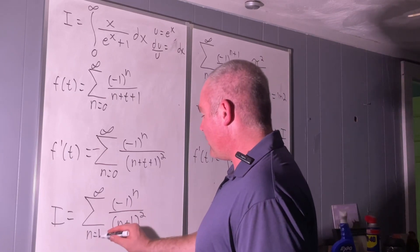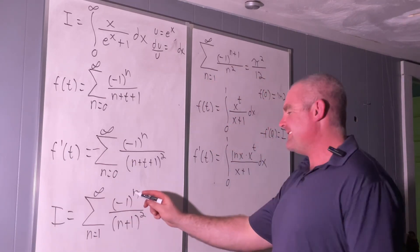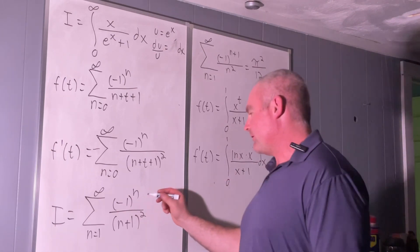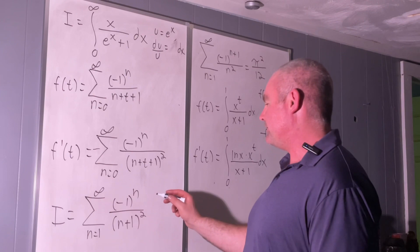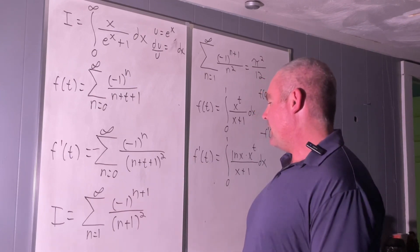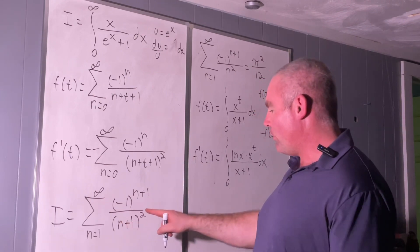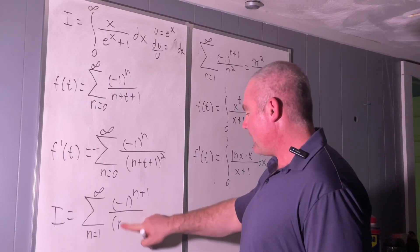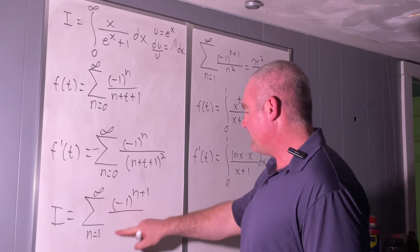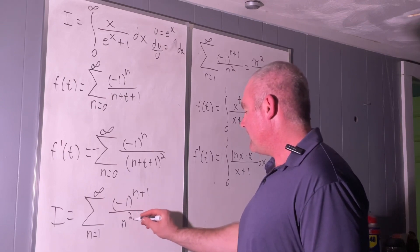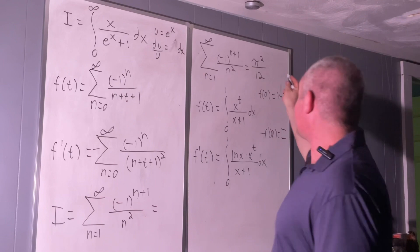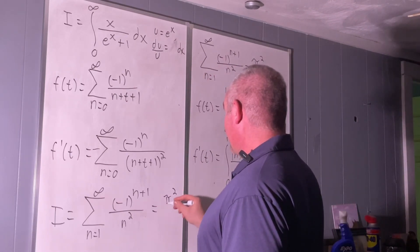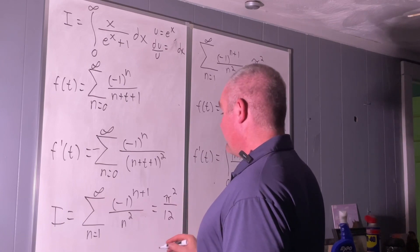And then n plus one minus one is just n. So we have n² in the denominator. And as stated right here, this is equal to π² over 12.